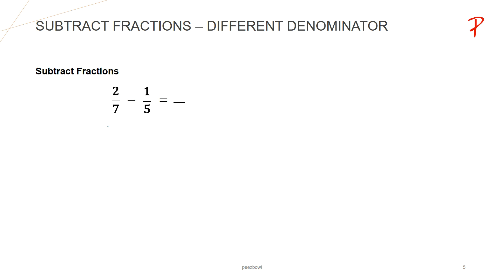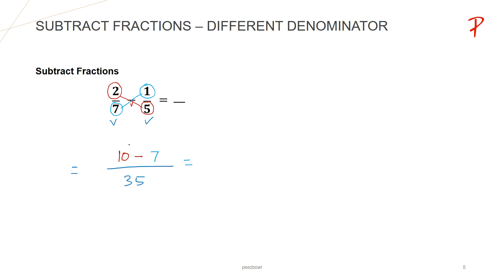Let us take one more example. Let us subtract 2 upon 7 minus 1 upon 5, following the second method. We are going to multiply both the denominators first — 7 multiplied by 5 is 35, and we write it at the denominator's place. For the numerator, I multiply the first fraction's numerator with the second fraction's denominator: 2 multiplied by 5 is 10. Then we have a minus sign, and we multiply the second fraction's numerator with the first fraction's denominator: 1 multiplied by 7 is 7. So the result is 10 minus 7 is 3, and at the denominator's place we have 35.